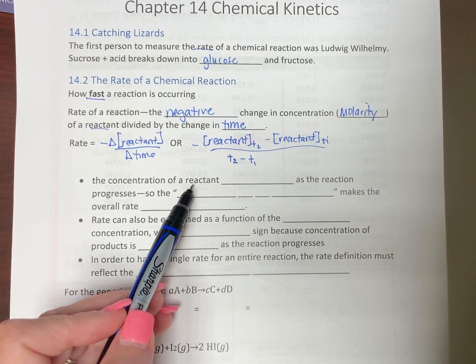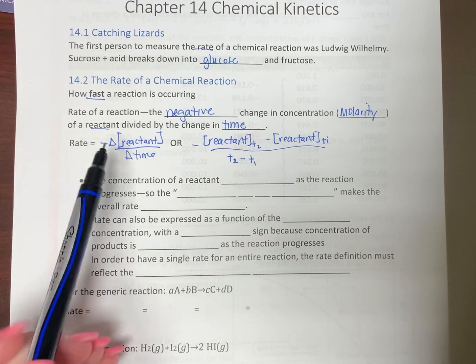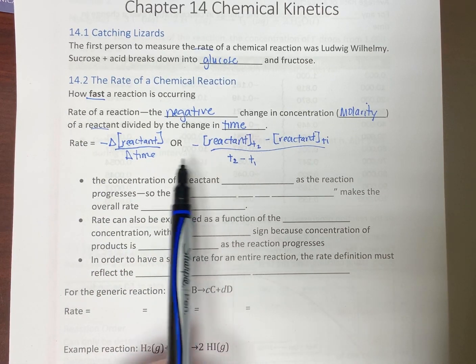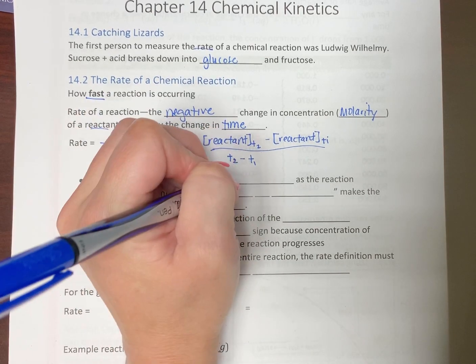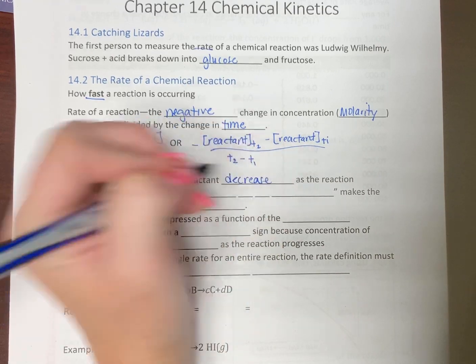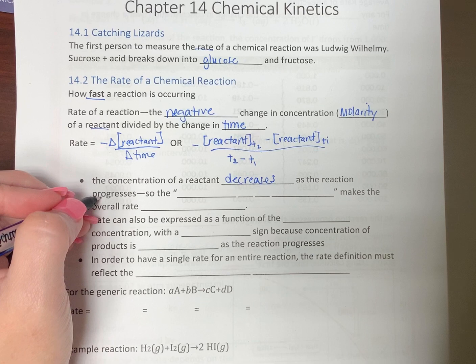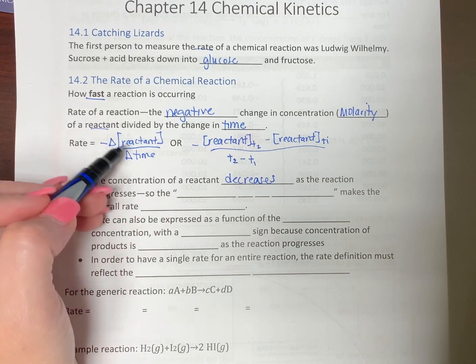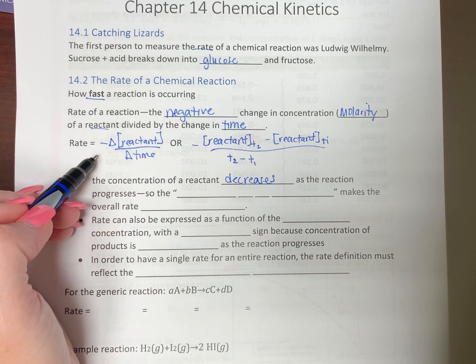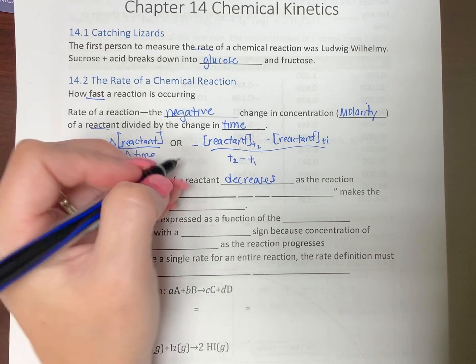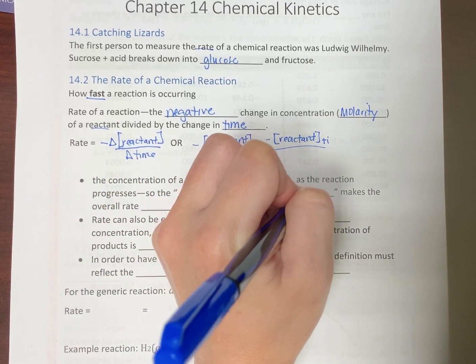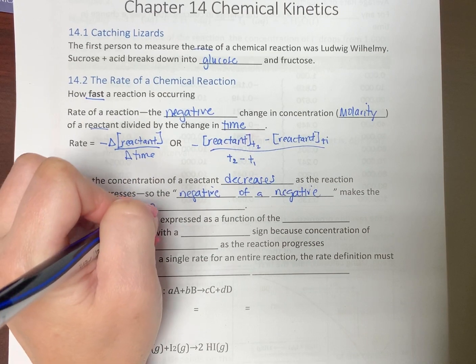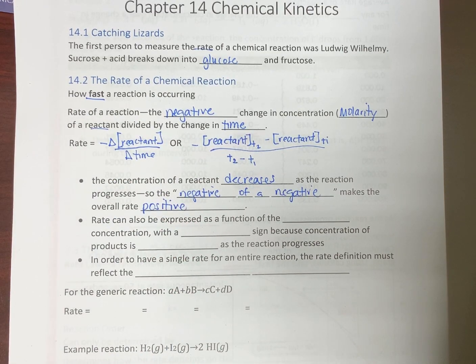Think about this. The concentration of a reactant, what happens when we're running a reaction? We go from left to right, so our reactants become products. As the reaction progresses, the amount of reactants that we have actually decreases as the reaction moves forward. The concentration is decreasing, that's a negative. We take the negative, so we do negative of a negative in order to make the overall rate positive.